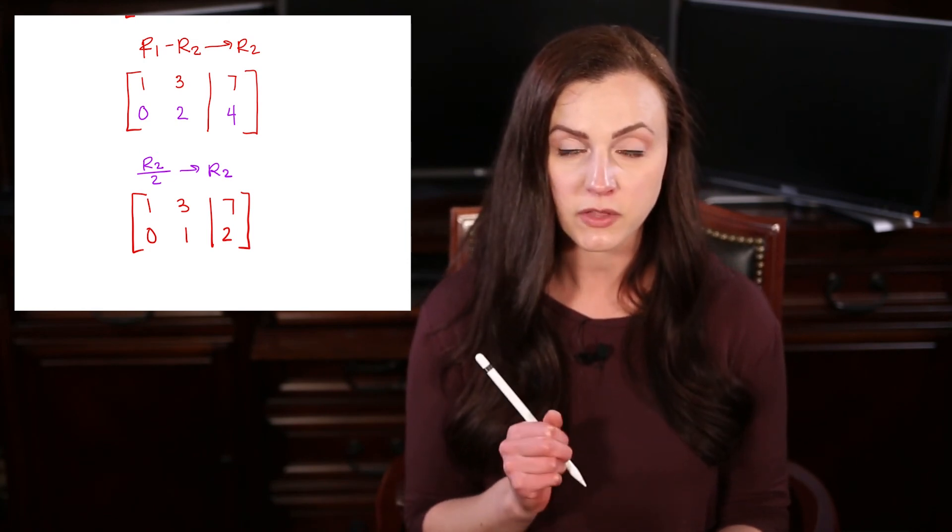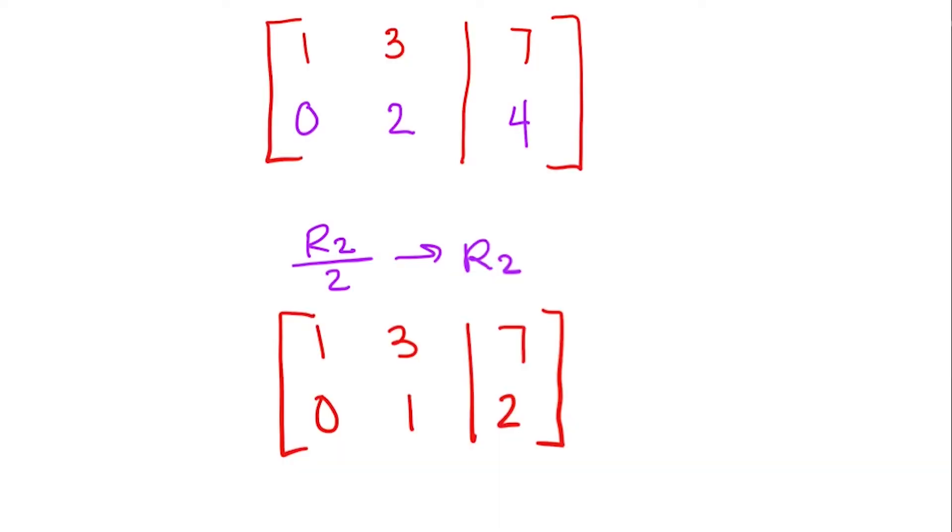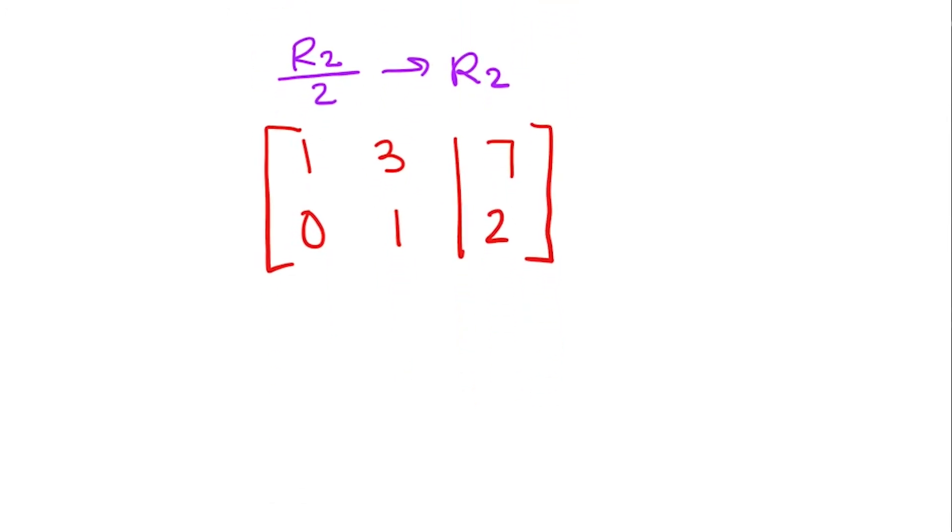So we're really close. The only thing we have left to do is turn that 3 into a 0. So what could we do to make this a 0? Well, think about how you would do this with an equation. With this 1 right here, what if this was a negative 3? Well then I'd be able to add these two together and get a 0. So what I'm going to do is I'm going to take row 1 and then add to it negative 3 times that second row. And we'll use that to replace the first row.